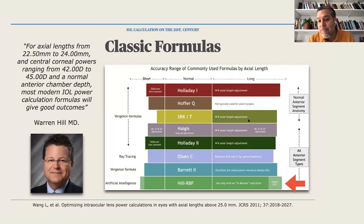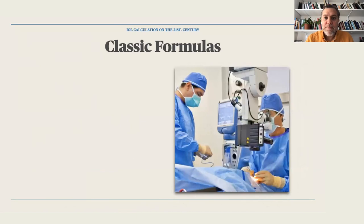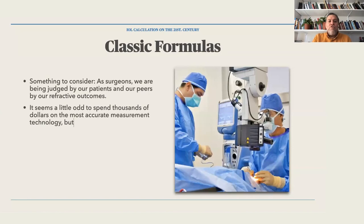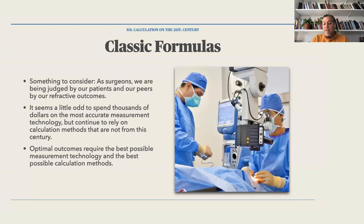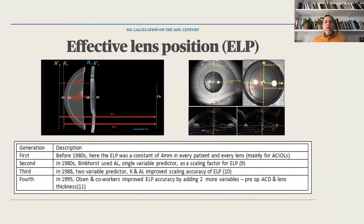When you have short eyes, Vergence formulas don't perform well; and with long eyes or anterior segment alterations, errors arise in IOL calculation. We now have new formulas we'll discuss. As surgeons we are judged by our refractive outcomes, and it seems odd to spend thousands of dollars on accurate measurement technology but continue relying on outdated calculation methods. Optimal outcomes require the best measurement technology and the best calculation methods — both are important.